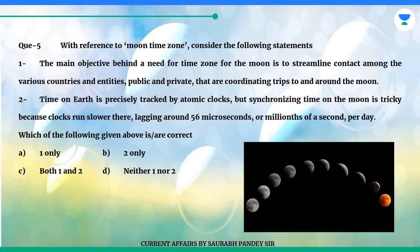Question 5: With reference to the Moon time zone, consider the following statements. 1. The main objective behind a need for a time zone for the Moon is to streamline contact among the various countries and entities, public and private, that are coordinating trips to and around the Moon. 2. Time on Earth is precisely tracked by atomic clocks, but synchronising time on the Moon is tricky because clocks run slower there, lagging around 56 microseconds per day.